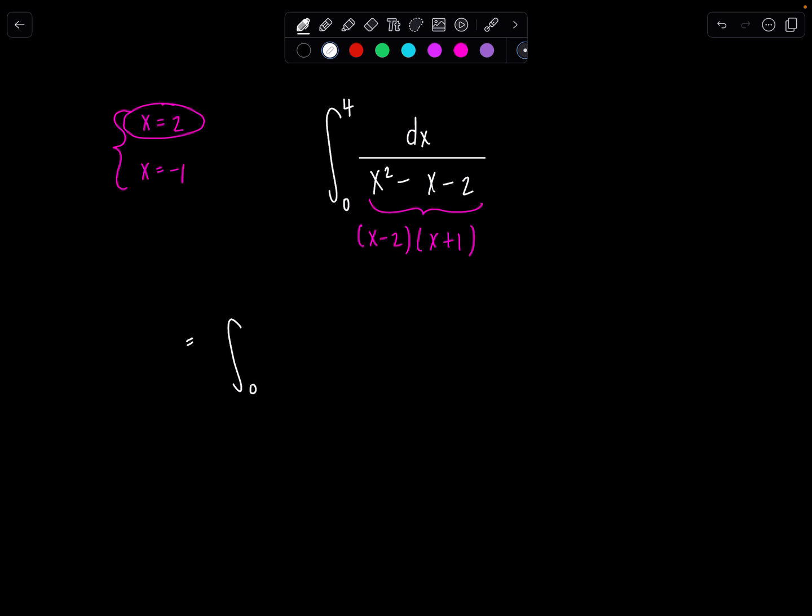Well, we're going to split up the integral. We're going to go 0 to 2, dx over x squared minus x minus 2, plus, and then you just pick back up where you left off. So you're going to go from 2 to 4, dx over x squared minus x minus 2. And then we're going to have to evaluate both of these integrals here, 1 and 2.